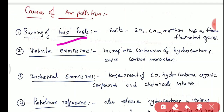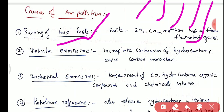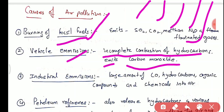The causes of air pollution include: burning of fossil fuels, which releases sulfur dioxide, carbon dioxide, methane, nitrous oxide, and fluorinated gases. Vehicular emissions result from incomplete combustion of hydrocarbons, releasing carbon monoxide, which is very dangerous in the environment.